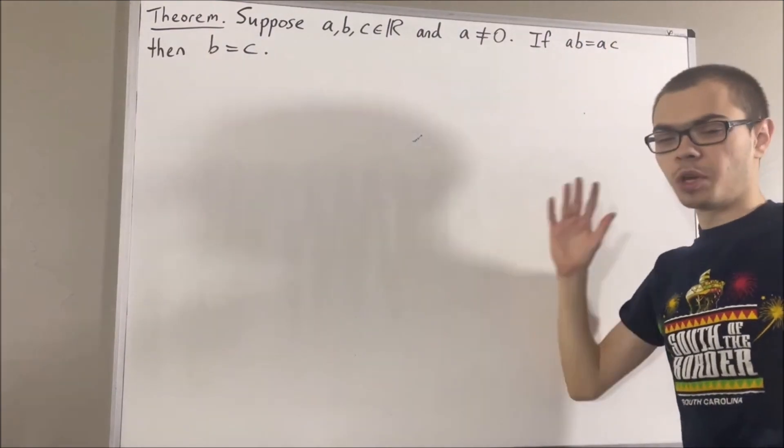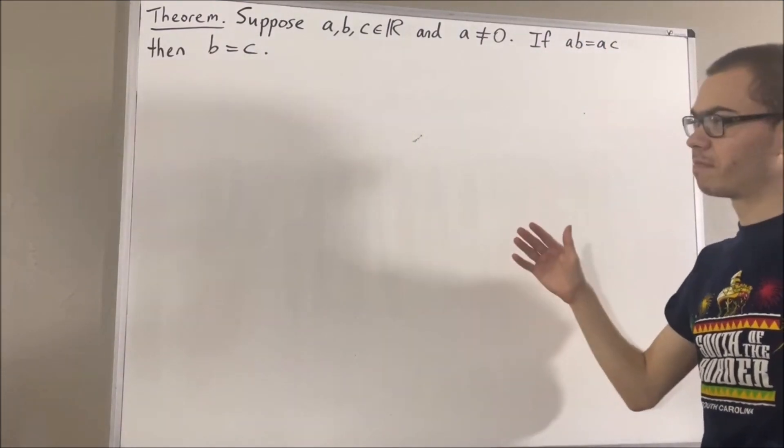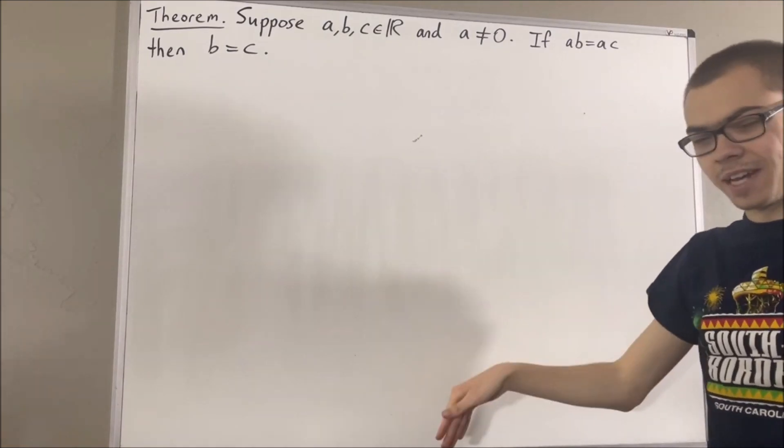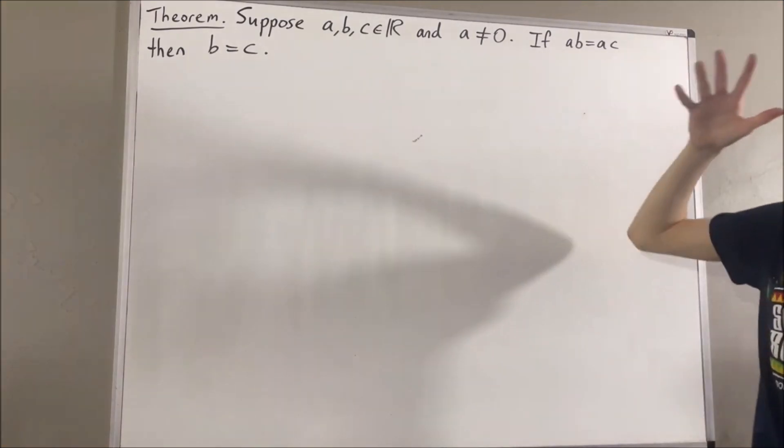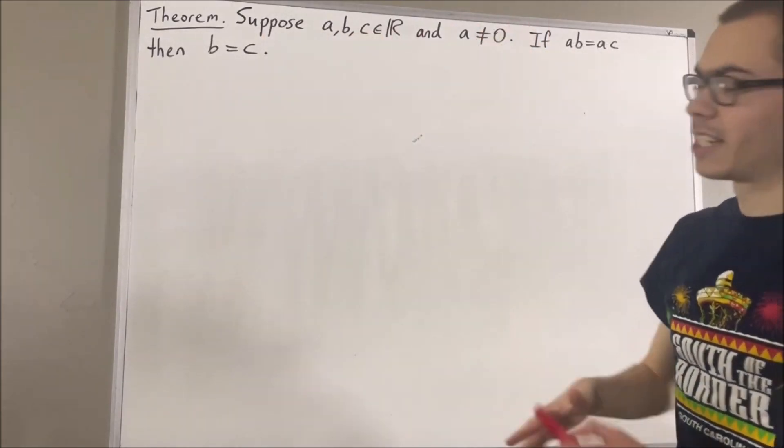In this series, we are using a list of 10 axioms for the real number system. I'll leave that list of axioms in the description of the video below. In proving this theorem, we are going to be using the following axioms.